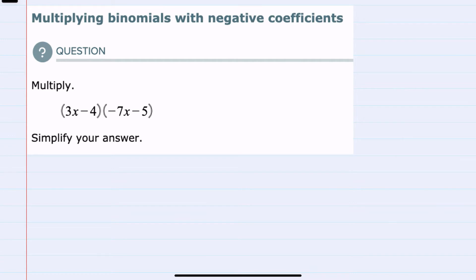Outside of that, the process is going to be the same in that we will FOIL our two binomials, starting first with the first term in each binomial. Here, multiplying, since we have that negative, we're mindful that 3 times negative 7 is negative 21, and x times x is x squared.